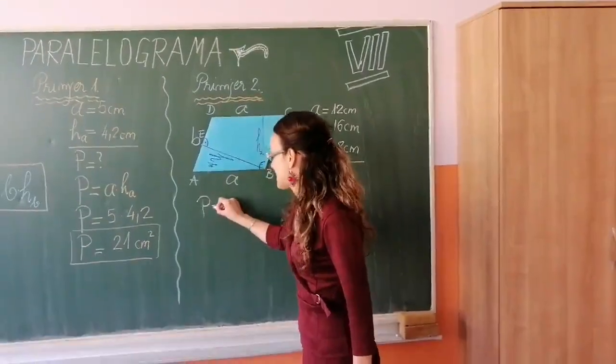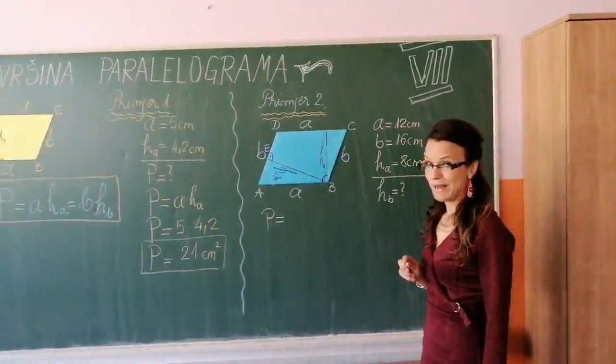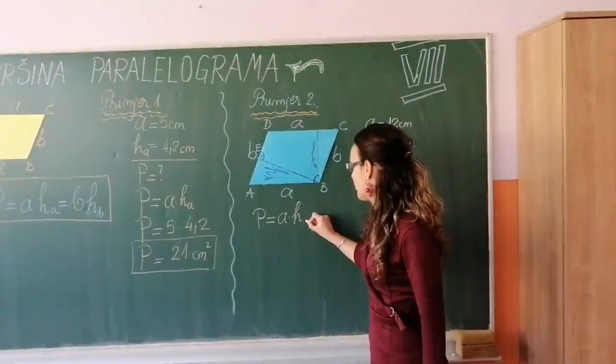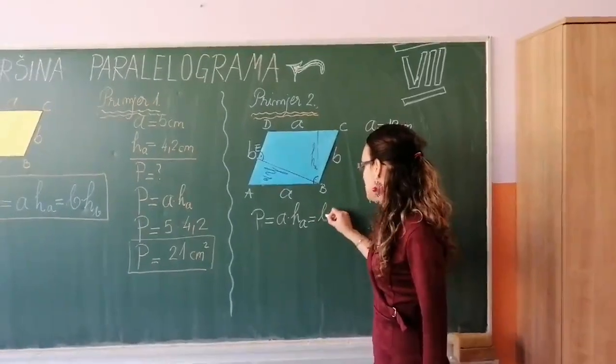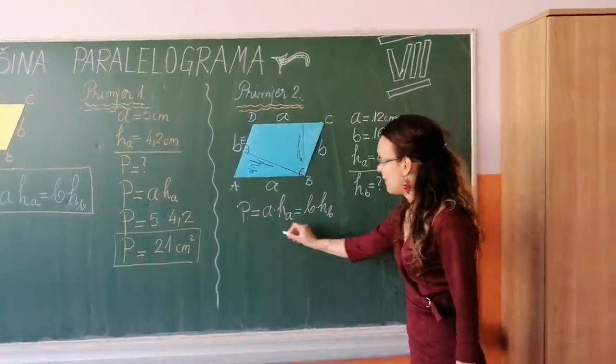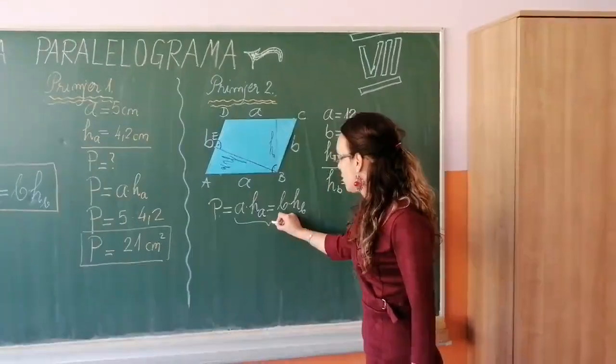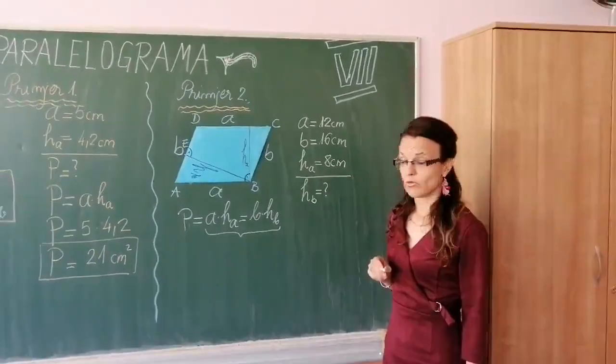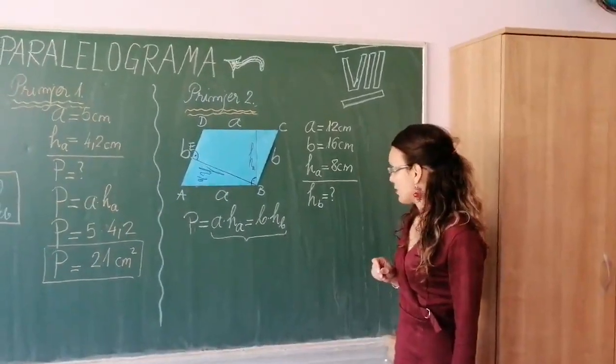Dakle, iz razloga što se sučunava površina mokovijeg paralelograma razumijemo ovu pod A puta ha, isto je to i B puta hb. Pa ćemo koristiti ovdje poslednju relaciju.